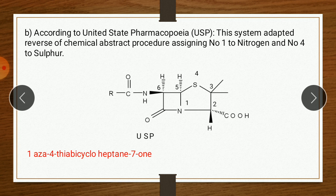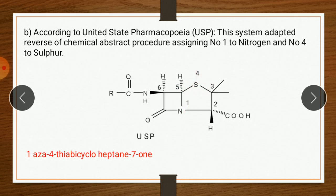The second system is according to the United States Pharmacopoeia (USP), which adopts the reverse of CAS. Here, nitrogen is given position 1 and sulfur is given position 4. The name according to USP is 1-aza, 4-thia, bicyclo heptane 7-one — opposite to the Chemical Abstracts name.